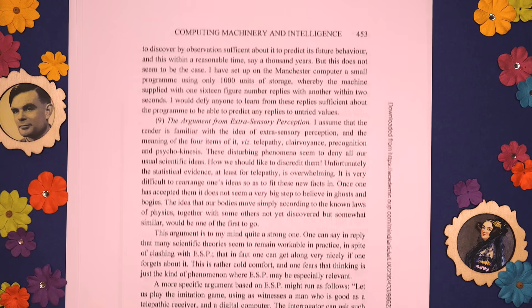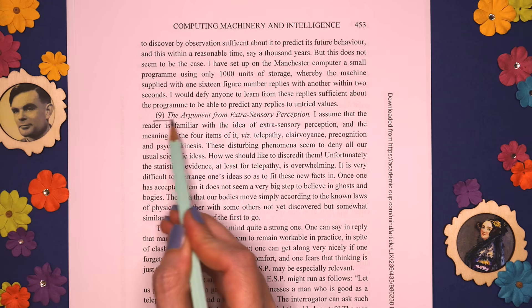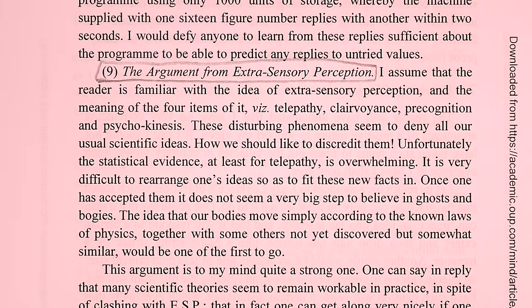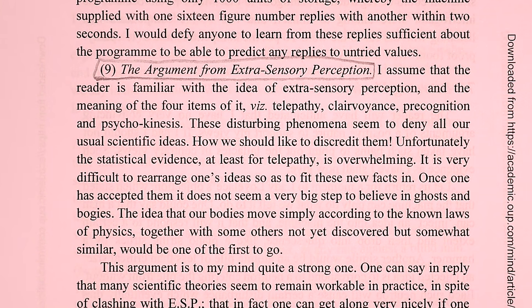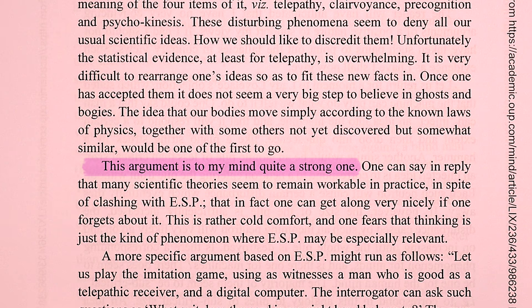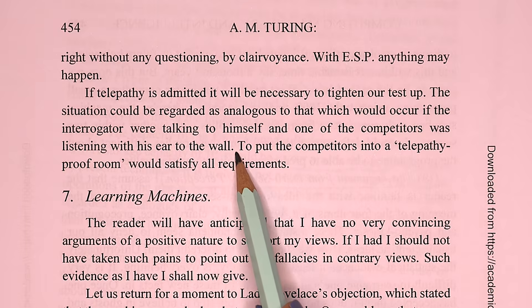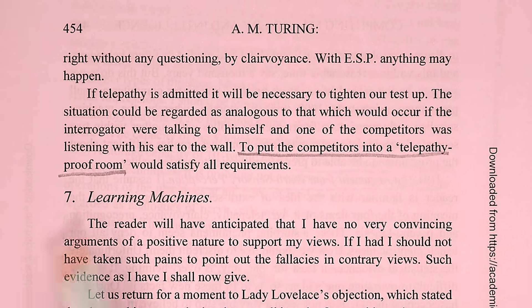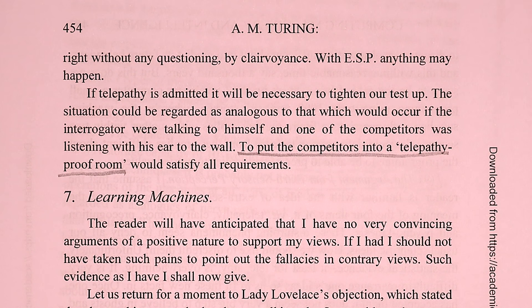Number 9 I'd never heard anyone mention until I read it in the paper — the argument from extrasensory perception. It includes a line saying that 'unfortunately, the statistical evidence, at least for telepathy, is overwhelming.' Turing seems to consider that his imitation game needs to take telepathy into account, even calling this argument 'quite a strong one,' and suggests putting competitors into a telepathy-proof room to overcome it.